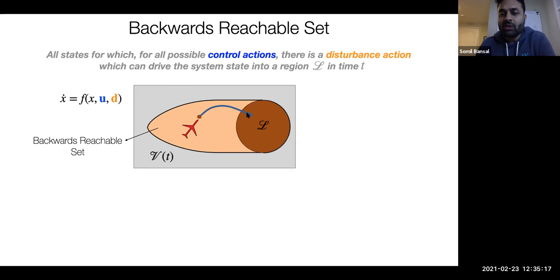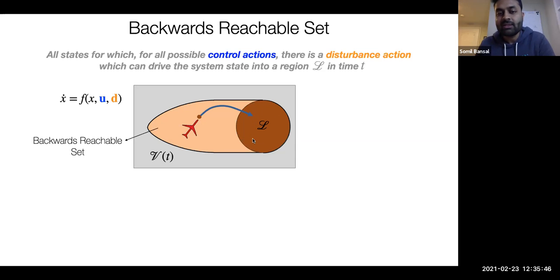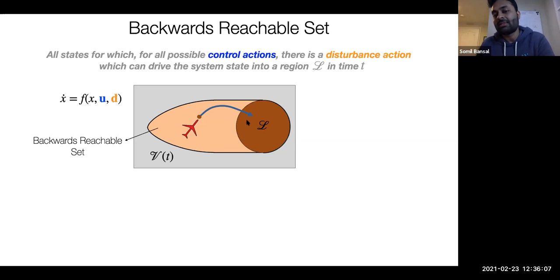I'm broadly interested in the safety analysis of autonomous systems, and Hamilton-Jacobi Reachability is a great tool for providing safety guarantees for such systems. In Hamilton-Jacobi Reachability Analysis, we characterize the safe and unsafe states using the concept of the backward reachable set. Given a particular target set — denoted by curly L — the backward reachable set represents the set of all states for which, for all possible control actions, there exists a disturbance action that will ultimately drive the system inside that target region within a time horizon T.